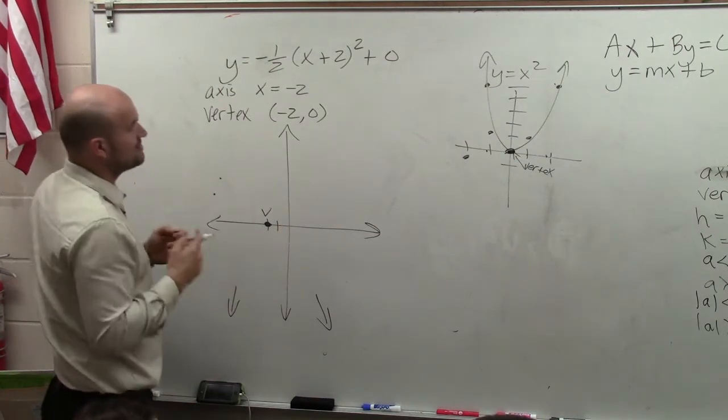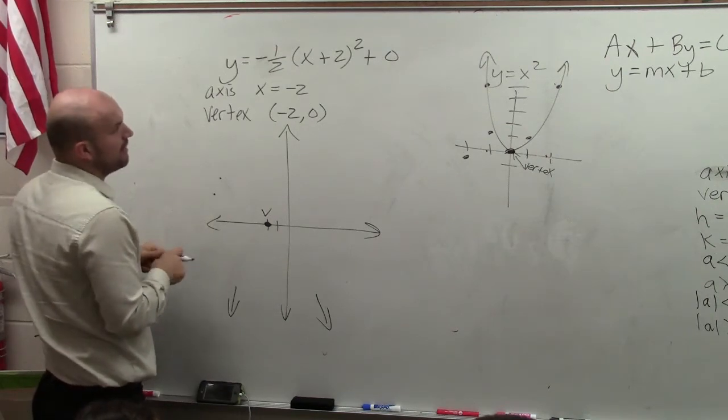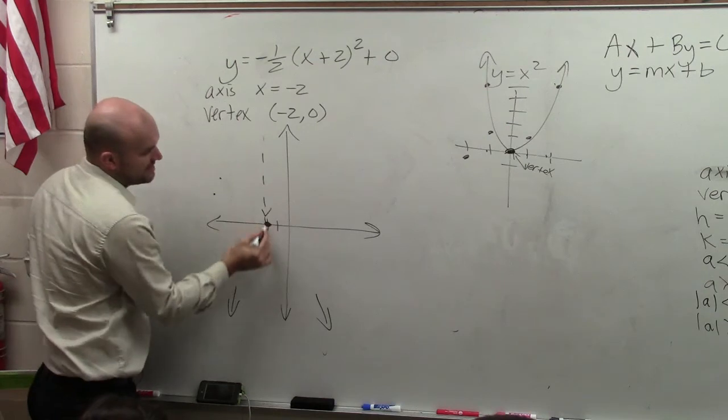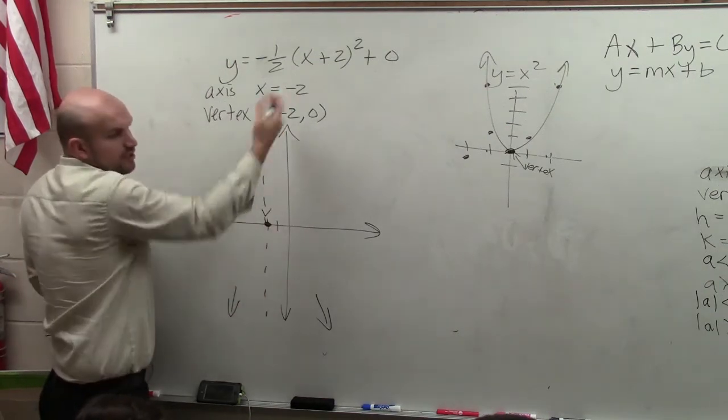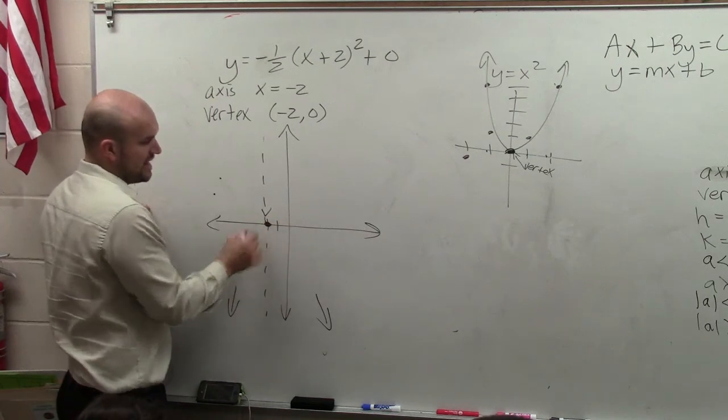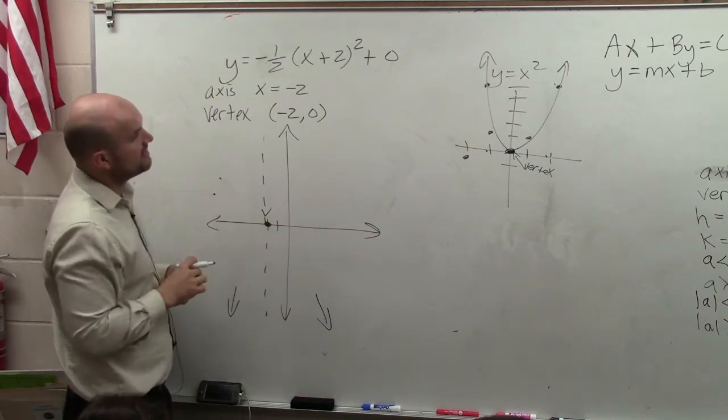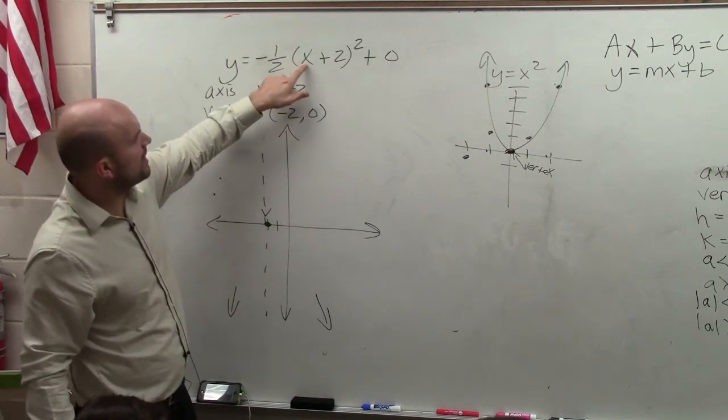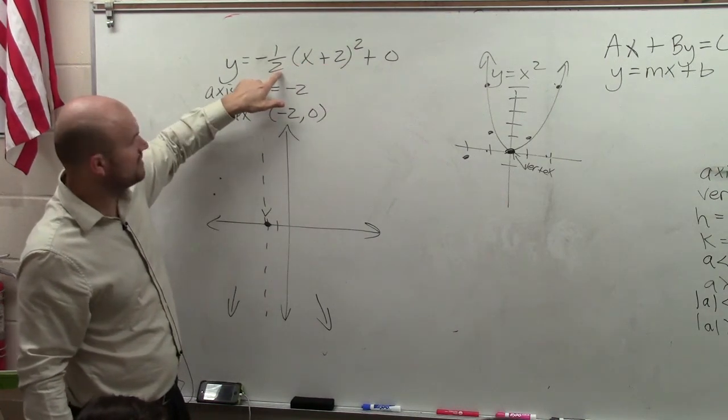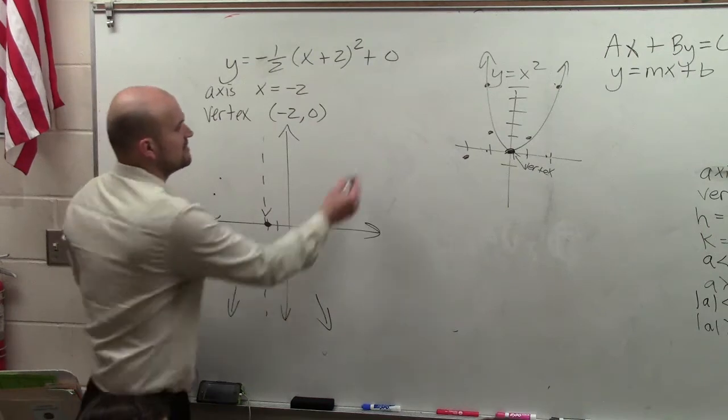So the best thing that I would do is I would choose values. When we did values last class period, we just chose any random values to plug in, usually the points closest to the axis of symmetry. However, in this case, I'm going to want to choose values that when I plug them in for x, add 2, and square them, I can easily multiply them by 1 half. So the values that I'm going to choose,